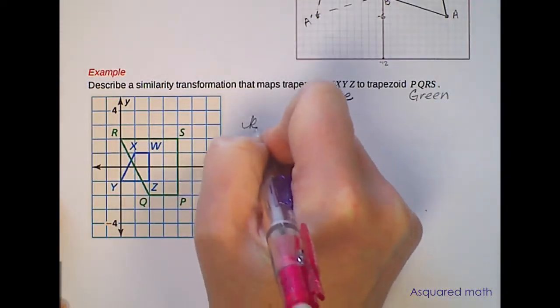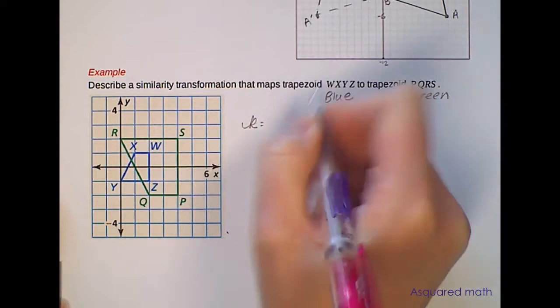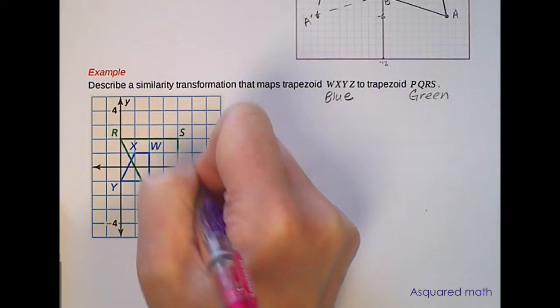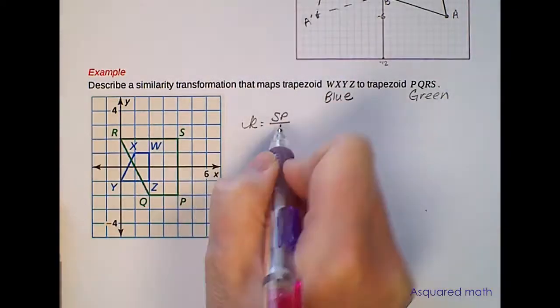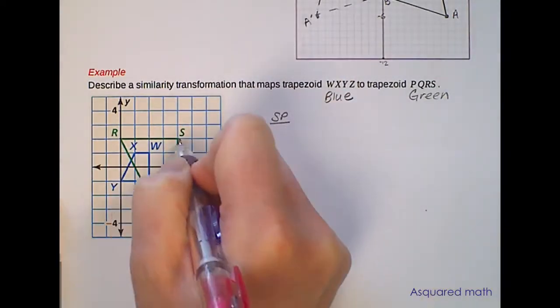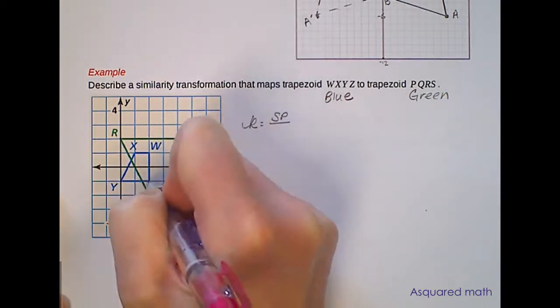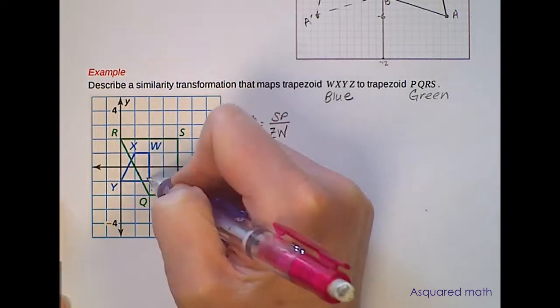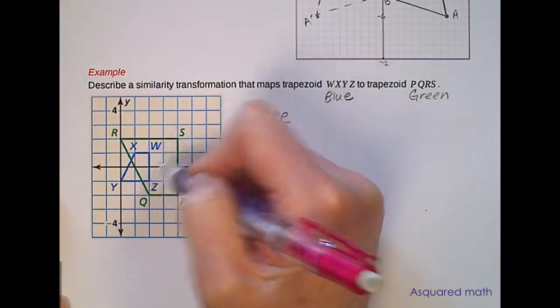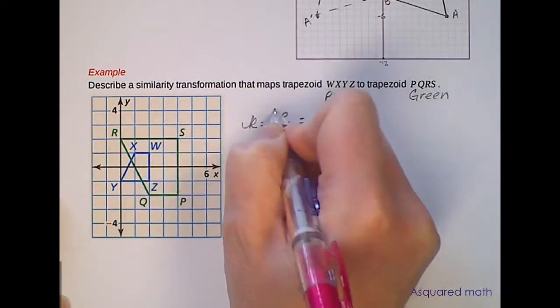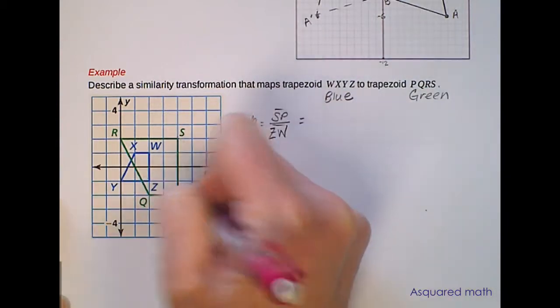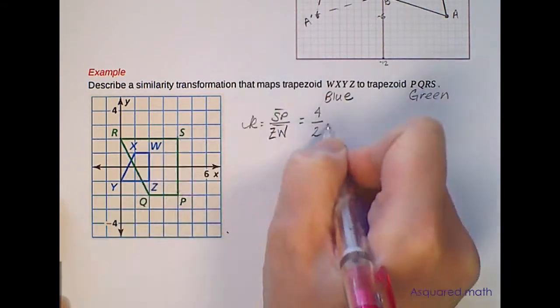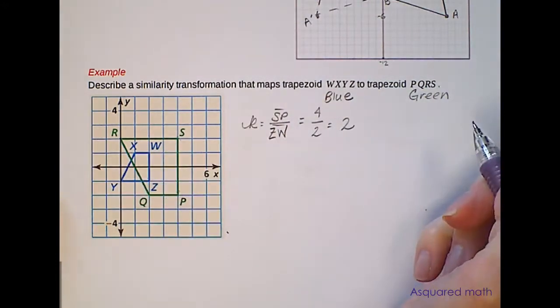In order to do that I want to take my image, a side length of my image, so if I look at SP and divide it by, SP is going to be related to ZW because we want to take our image to our pre-image, the ratio of the image to the pre-image, and the side length or line segment SP is 4 units long and ZW is 2 units long. So we can figure out that our scale factor is 2.